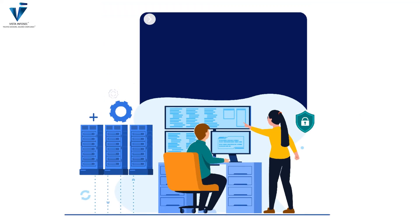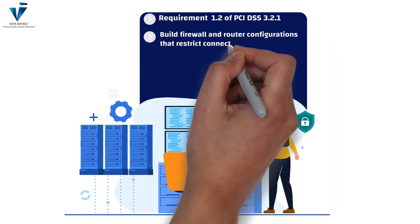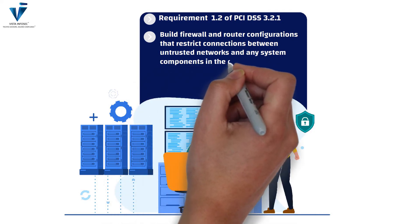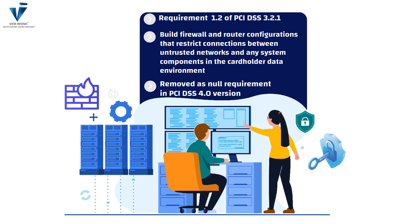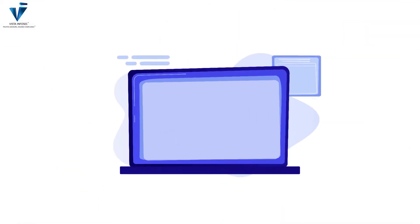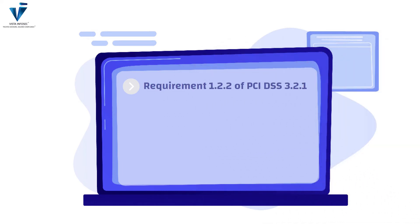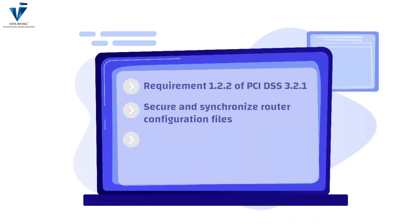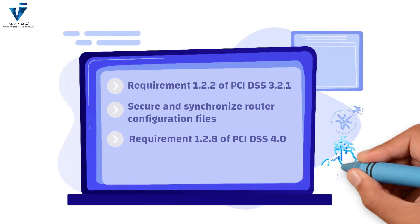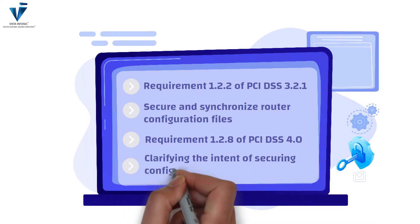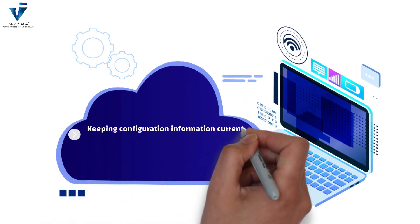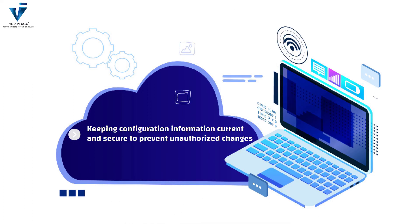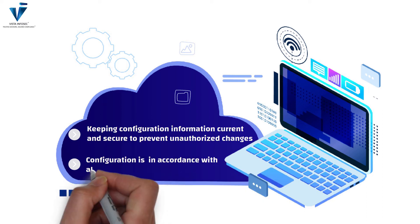Requirement 1.2 of PCI DSS version 3.2.1 — building firewall and router configurations that restrict connections between untrusted networks and system components in the cardholder data environment — has been removed as a null requirement in PCI DSS 4.0. Requirement 1.2.2 of PCI DSS 3.2.1 — secured and synchronized router configuration files — is now covered by Requirement 1.2.8 of PCI DSS 4.0. The updated requirement details keeping configuration information current and secure to prevent unauthorized changes and to ensure configuration is in accordance with all specified elements.